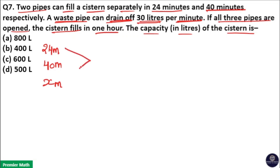Take the LCM of 24, 40, and x. Here, LCM of 24 and 40 is 120, and we don't know the value of x. So 120x is the LCM of 24, 40, and x.